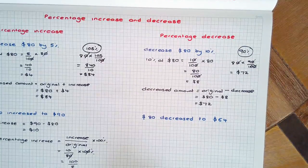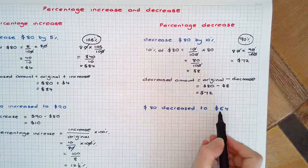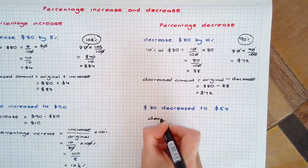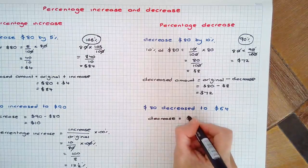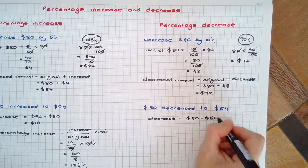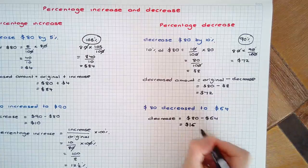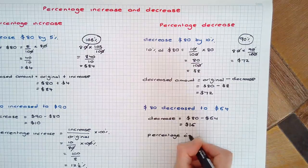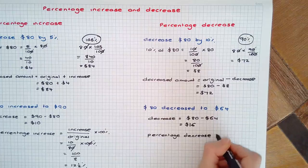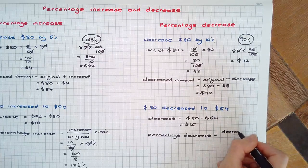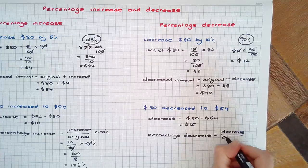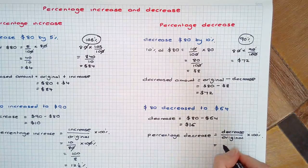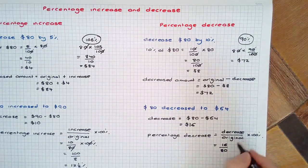Suppose the cost of an item was originally $80 but now has decreased to $64. The decrease equals the original $80 minus the $64 being $16 decrease. This as a percentage, we take the decrease amount divided by the original and times by 100%. In this case 16 over the original $80 times 100%.